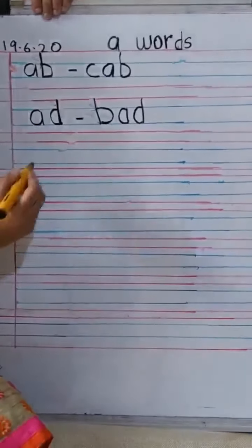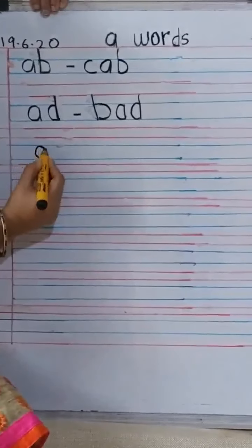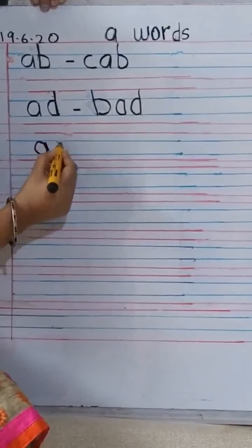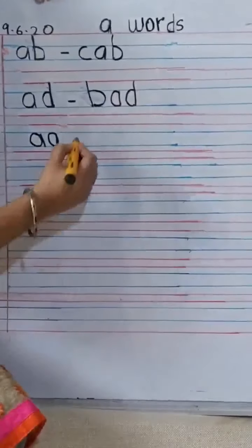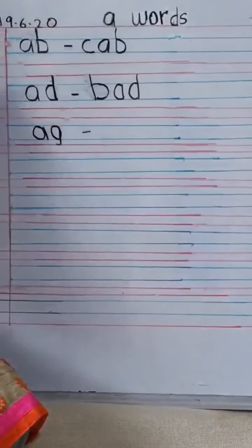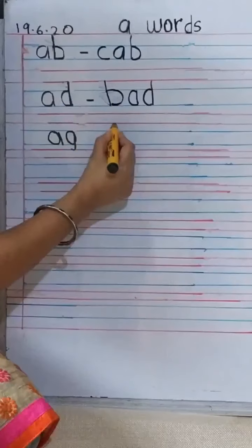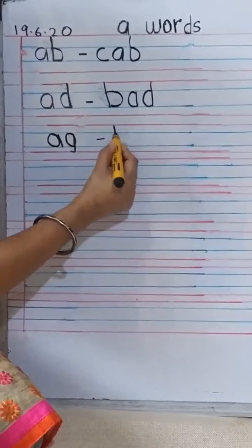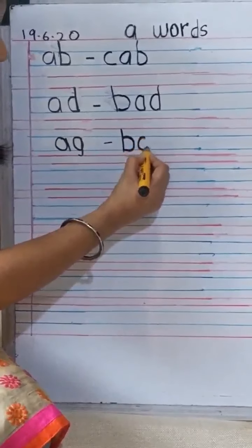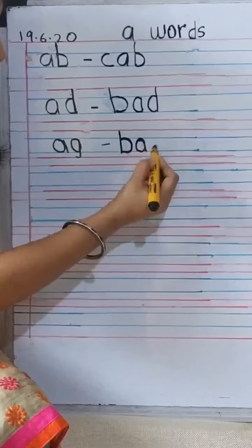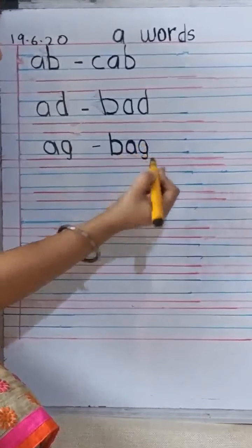And the next word is AG. So now A and a G. That is a G. AG, add, give a small dash. And then we will write a bag. Yes. A standing line. C, C, B, A, and a G. That is a G. B, AG, bag.